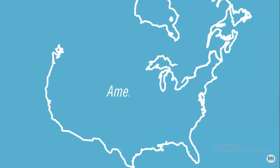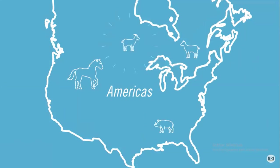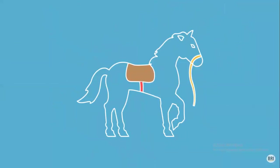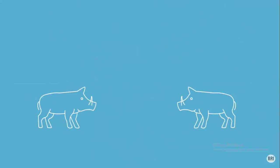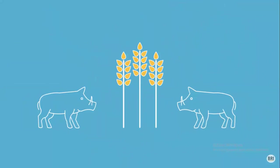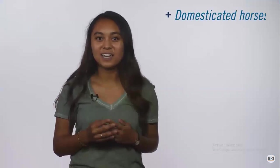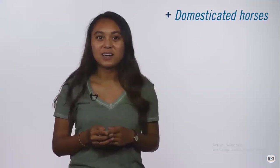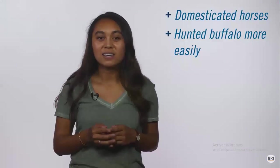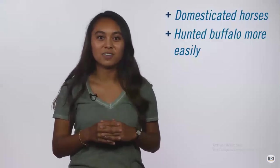Animals were an important part of the Colombian Exchange. Horses didn't exist in the Americas prior to European exploration. Europeans introduced horses, pigs, sheep, goats, and chickens to the Americas. Some continued to be domesticated, while others — such as wild pigs — escaped and roamed wild in the New World, often destroying agricultural crops.